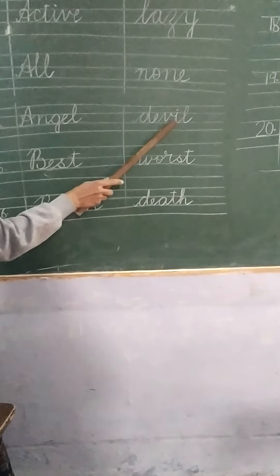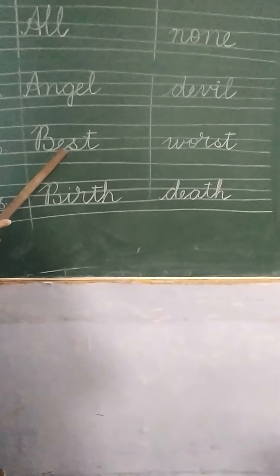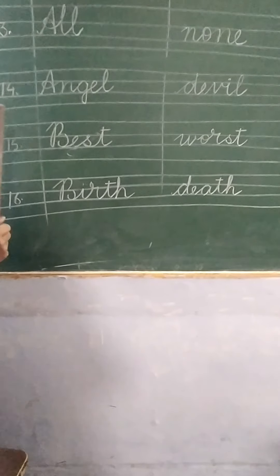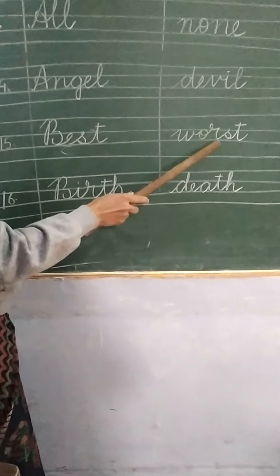Number 15. Best. B-E-S-T best. And the opposite of best is worst. Best means good. Number 1. Worst. W-O-R-S-T worst.